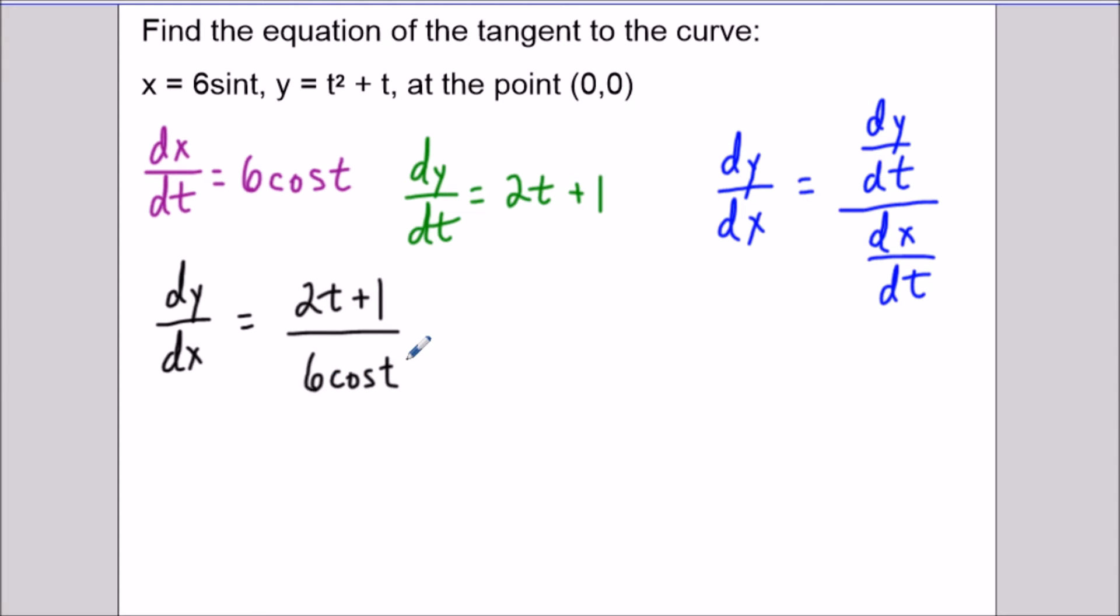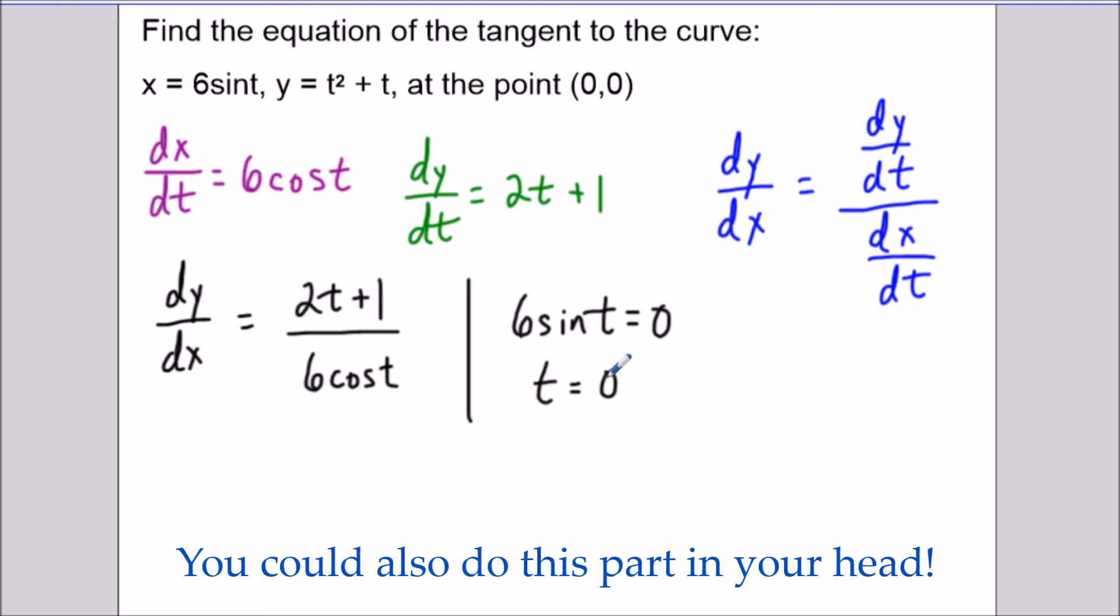So for the next part here, what we need to be able to find is, we have to be able to find what value of t generates the point (0,0). So if we look here, you could set up a separate equation and set the x component 6sin(t) equal to zero and sin is equal to zero at t equals zero. It's also equal to zero at t equals π, 2π and so on. However, if we look at the second equation, t² + t is equal to zero for two values when t is equal to zero and when t is equal to negative one.